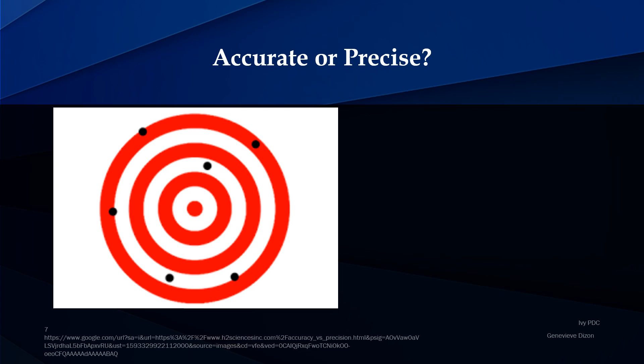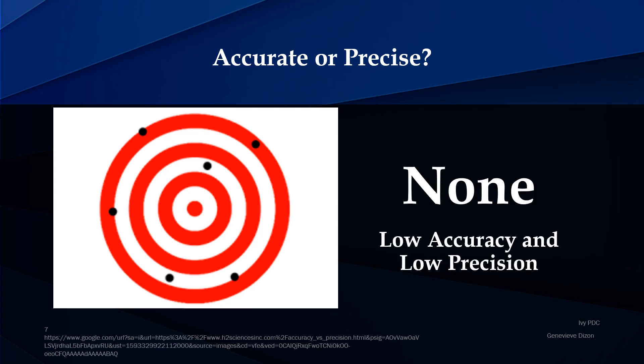Next, what about this one — is it accurate or precise? There are five testing results. The answer is neither. These tests are all low in accuracy and low in precision. Low in accuracy because not a single test was able to reflect the true value, and also low in precision because they are not close to each other. This is the worst of all testing results: not accurate and not precise.